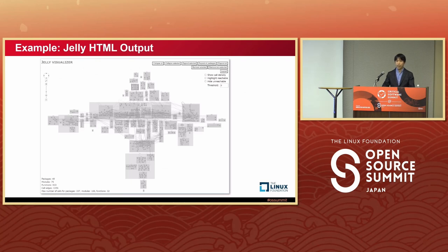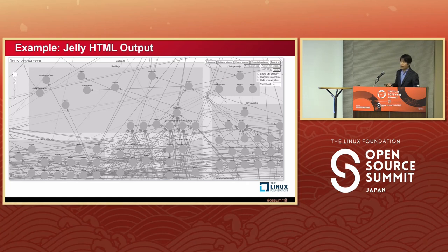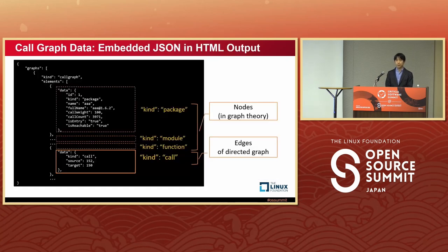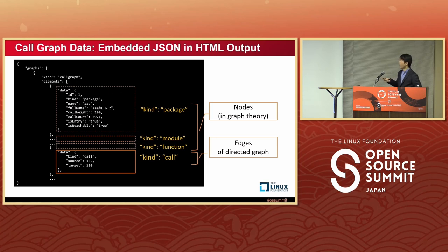If you zoom into the center part, you will see that rectangles represent packages and modules, and circles represent functions. Arrows and lines represent package dependency and function calls. The call graph data included in the HTML output is JSON elements — so many elements that represent packages, modules, functions, and calls — and we use them as nodes and edges in graph terminology.